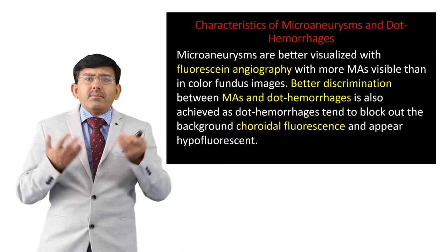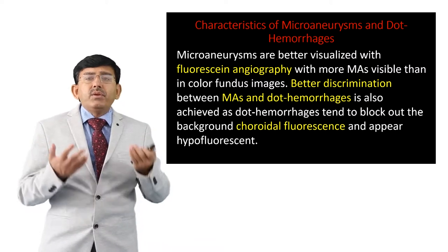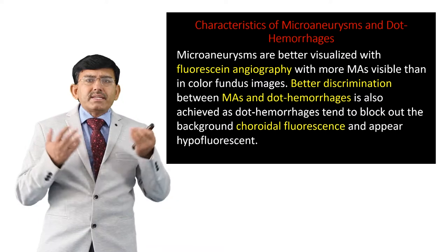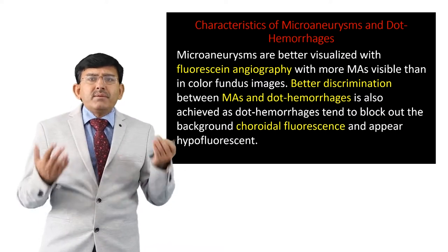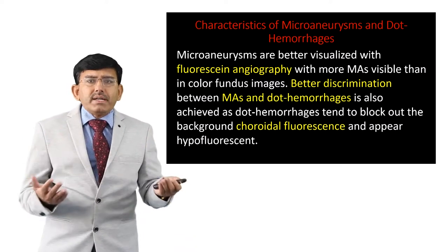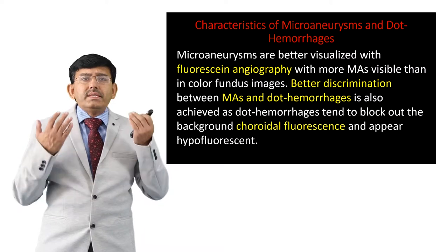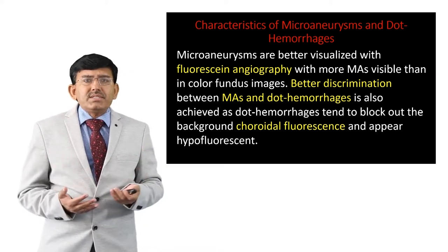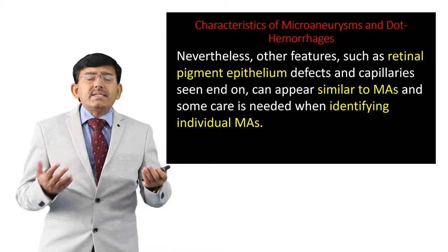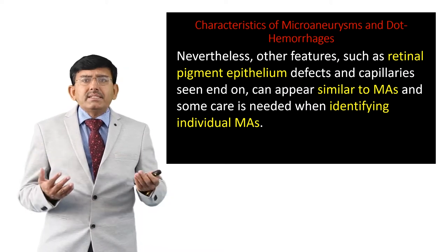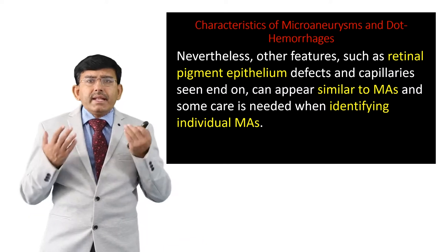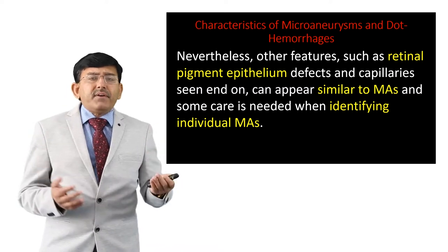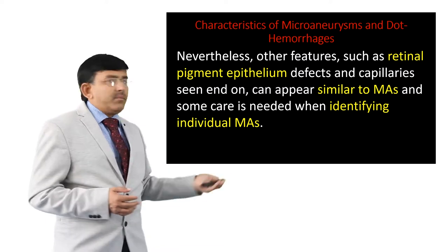Microaneurisms are better visualized with fluorescent angiography, with more microaneurisms visible than in color fundus images. Better discrimination between microaneurisms and dot hemorrhages is also achieved. Nevertheless, other features such as retinal pigment epithelium defects and capillaries can appear similar to microaneurisms, and some care is needed when identifying individual microaneurisms from fundus images.